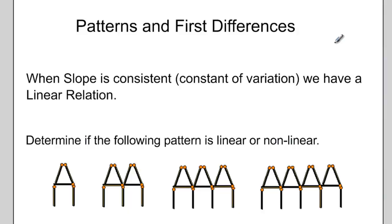In this video we'll be talking about patterns and first differences. When slope is consistent, or the same, we have a linear relation. When the constant of variation is the same, we have a linear relation. So let's try a problem and see if the following pattern is linear or nonlinear.